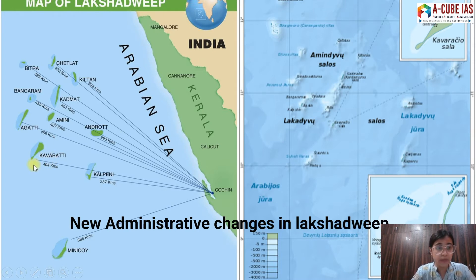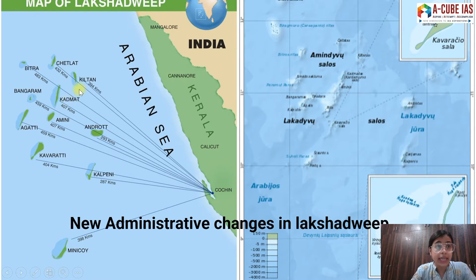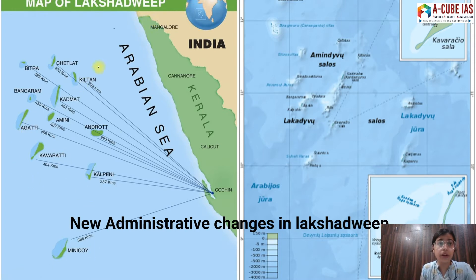Some important islands include Kavaratti — there is an important Indian warship named after Kavaratti — then there is Minikoi. Minikoi and the rest of the islands are divided by the ninth parallel. Other islands include Kalpeni, Andrott, Agatti, Amini, Kadmat, Kiltan, Chetlat, and Bitra. Some important ones to remember are Bangaram, Kiltan, Kavaratti, and Minikoi.